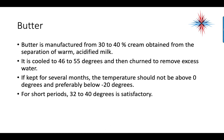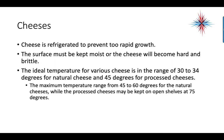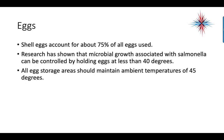Butter can be kept for several months — the temperature should not be above 0 degrees and preferably below negative 20 degrees; for short periods, 32 to 40 degrees is satisfactory. Cheese is refrigerated to prevent too rapid growth, and the surface must be kept moist or the cheese will become hard and brittle. The ideal temperature for natural cheese is 30 to 34 degrees and 45 degrees for processed cheeses. Maximum temperatures range from 45 to 60 degrees for natural cheeses, while processed cheeses can be kept on open shelves at 75 degrees. Eggs account for 75 percent of all eggs used as shell eggs, and research has shown that microbial growth associated with salmonella can be controlled by holding eggs at less than 40 degrees. All egg storage units should maintain an ambient temperature of 45 degrees.